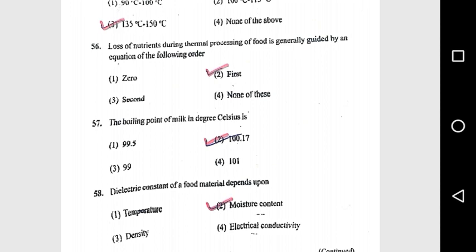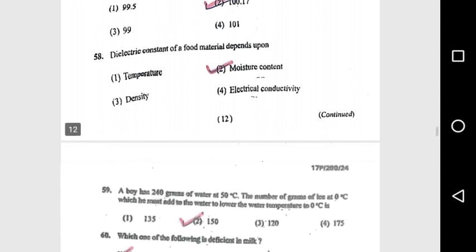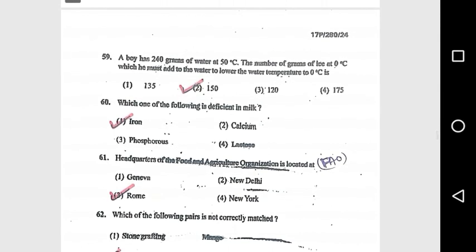Question 57: The boiling point of milk in degree Celsius is 100.17°C. Question 58: Dielectric constant of food material depends upon moisture content. Question 59: A boy has 240 grams of water at 15°C. The number of grams of ice at 0°C which he must add to water to lower the temperature to 0°C is 50 grams.